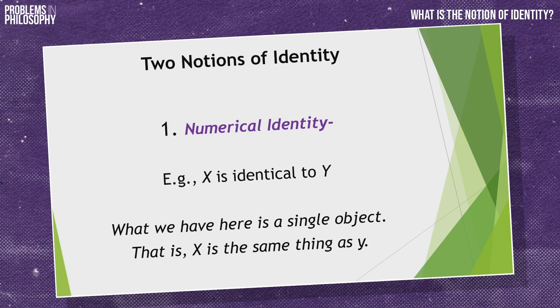What is numerical identity? Here's an example: X is identical to Y. You can understand X and Y as variables — you can replace them by any proposition, statement, or names. When we say that X is identical to Y in a numerical sense, we are talking about one single object. That means X is the same thing as Y. Every time we talk about identity in its numerical sense, what should come to our mind is exactly one object.